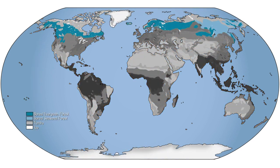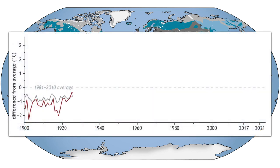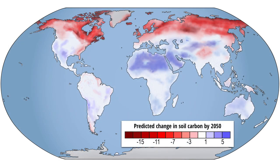These northern ecosystems include the tundra and boreal forest biomes, which are part of an Arctic region that is warming three times as fast as the globe as a whole, and has already warmed substantially more than the global average. This is predicted to accelerate decomposition rates and increase the release of carbon from soils into the atmosphere as CO2.